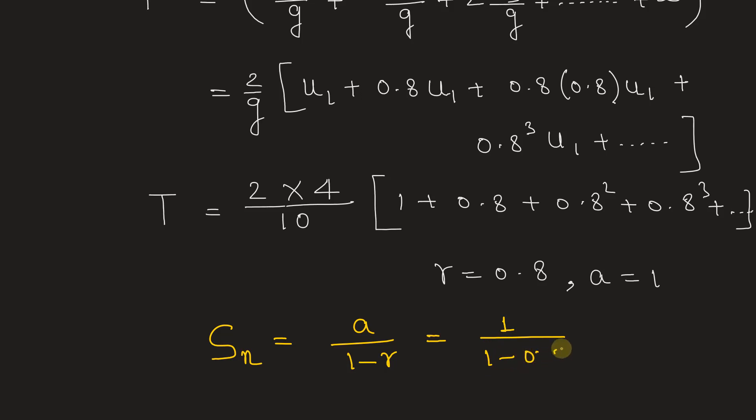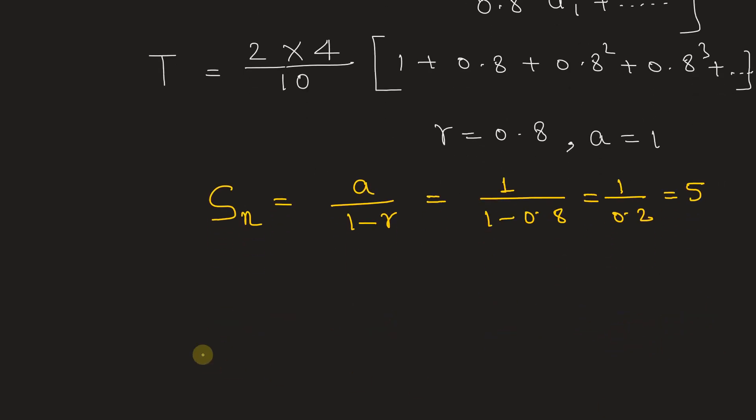So this will be equal to 1 by 0.2. So this is 5. Now we can find the total time taken, T will be equal to 2 × 4 by 10 multiplied by 5. So this will be equal to 4 seconds.